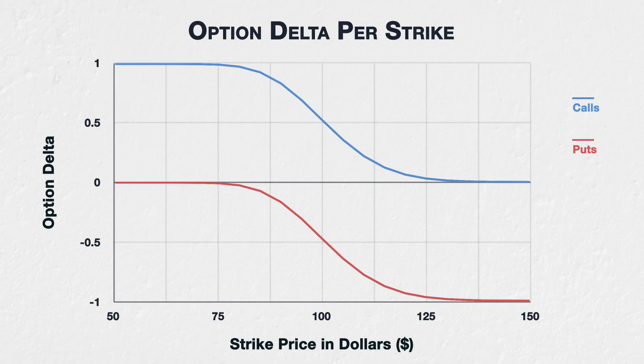The following chart shows the deltas for all options of a fictional asset, with a current price of $100, 30 days to expiry, and an implied volatility of 40%. The strikes range from $50 to $150.